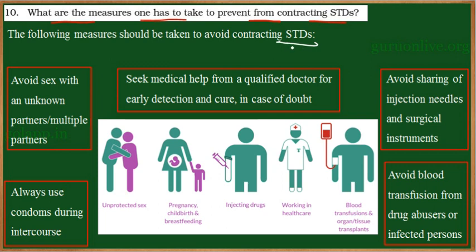AIDS is one example, syphilis, gonorrhea — these are the examples of STD. They are either caused by bacteria or virus. These bacteria or virus which cause diseases like AIDS, syphilis or gonorrhea are transferred from an infected person to a healthy person through sexual intercourse.